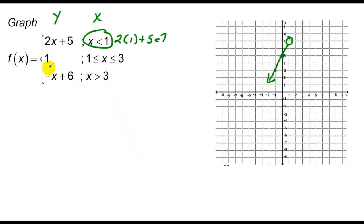When x is between 1 and 3, y equals 1. It's a horizontal line starting at x equals 1 with y equals 1, moving to the right until x equals 3 where y is also 1. I connect the dots, and notice both circles are filled in because the condition uses 'equal to.'